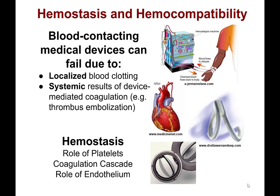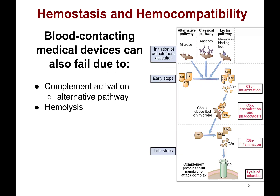Blood-contacting medical devices can fail due to localized blood clotting on the device or due to systemic effects of device-mediated coagulation — for example, due to thrombus embolization, in which a piece of the clot breaks off and travels to a distal organ. They can also fail due to complement activation via the alternative pathway where C3b adsorption triggers activation, or due to hemolysis, which is the lysis of red blood cells.